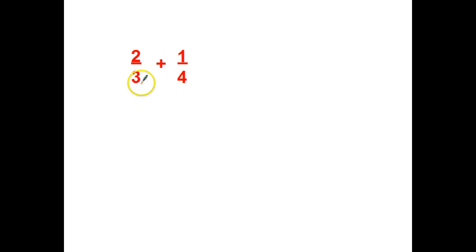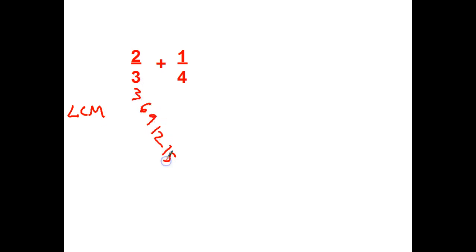Alright, here's a step up — you'll notice it changed from black to red. For this fraction, if I try to take my smaller denominator 3 times something to equal 4, there's no numbers that work. So what I have to do first is find the LCM of those two numbers. So 3, 6, 9, 12, 15 — and 4, 8, 12. My LCM is going to be 12.